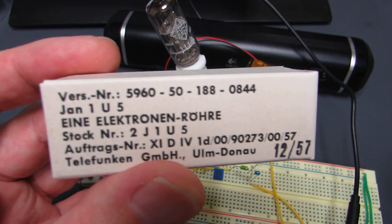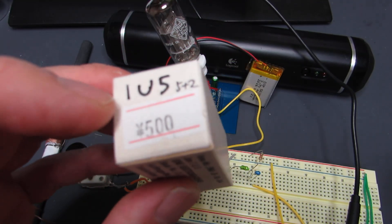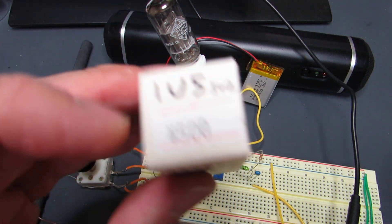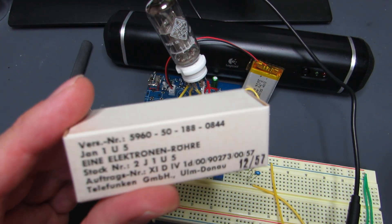Hello, so this time I got the vacuum tube named 1U5 just by 500 yen at Akihabara.